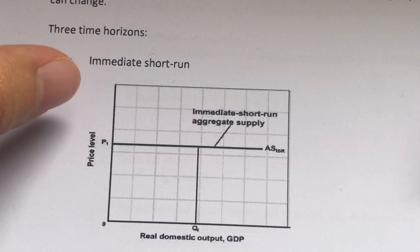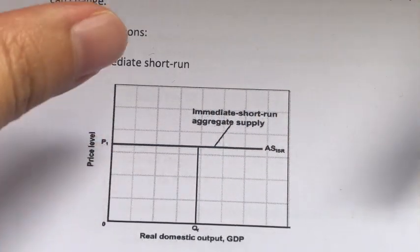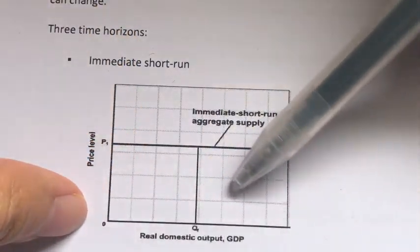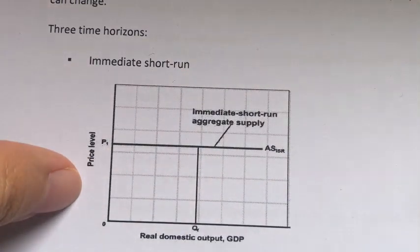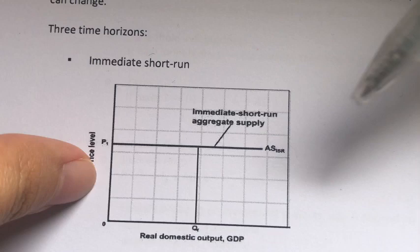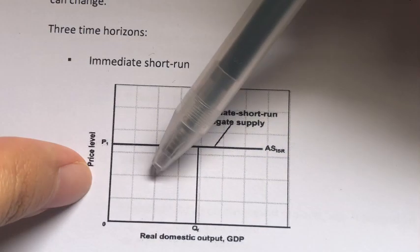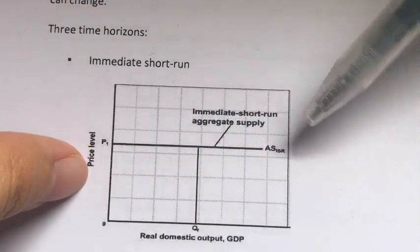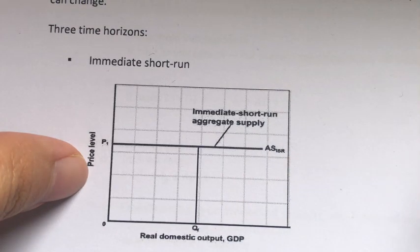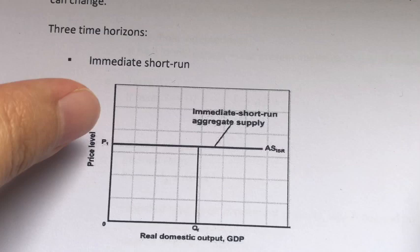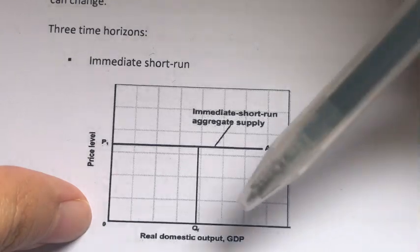With output prices fixed and firms selling however much customers want to purchase at those prices, the immediate short run aggregate supply curve is a straight line. This straight line implies that the total amount of output supplied depends directly on the volume — how much is being demanded at that particular price level. If total spending is low at price P1, firms will supply a small number of output. But if total spending is high at P1, firms will supply a higher amount of output. The resulting amount of output may be higher or lower than the economy's full employment output level QF.